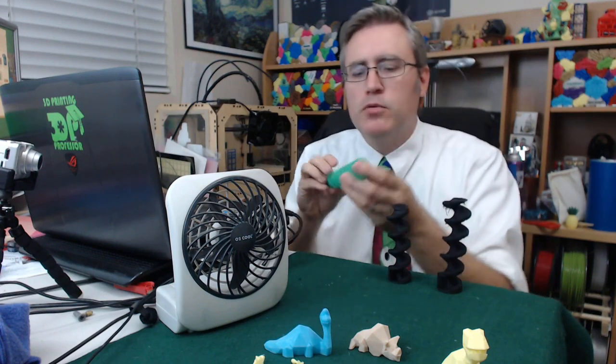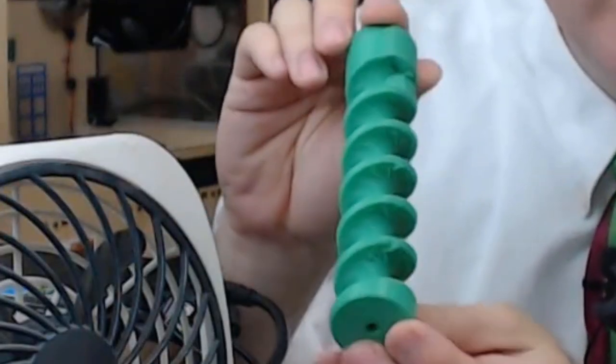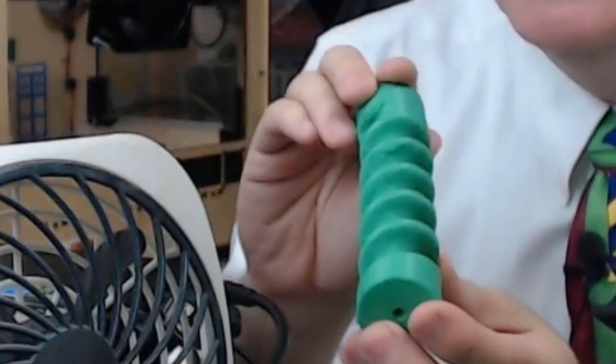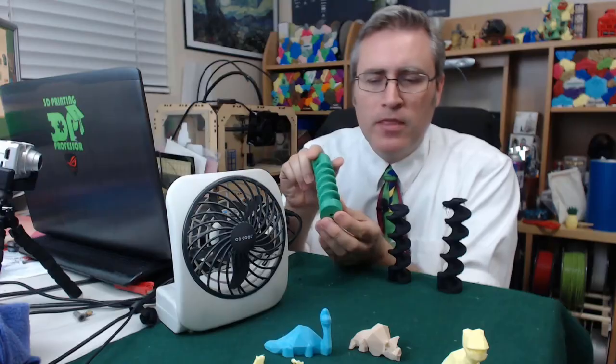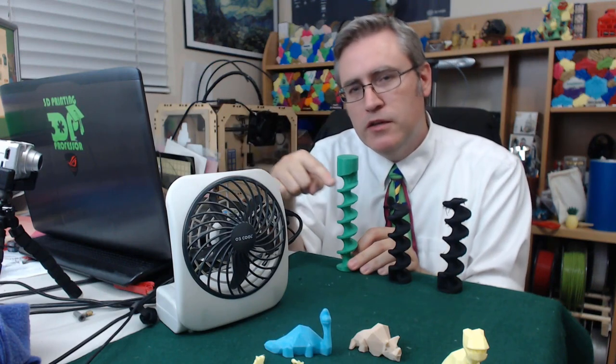Now with this particular print, some of these overhangs came out looking really good, but then on the opposite side, the overhangs came out looking not as good. And why is that? Well, that's because the fan on this particular print was only coming in from one direction.